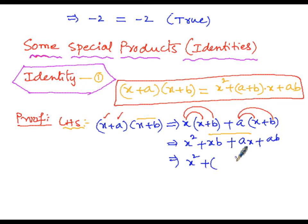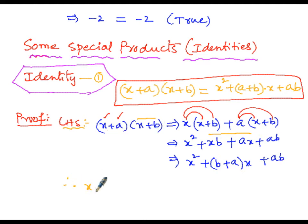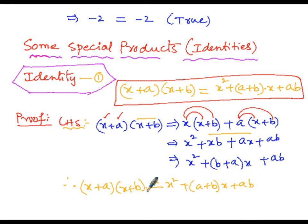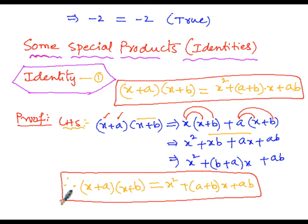Now collecting like terms: x squared is written as is. The terms bx and ax are like terms since both have variable x, so taking x as common gives x squared plus (b plus a) times x plus ab. Since b plus a is the same as a plus b, we get: x plus a into x plus b equals x squared plus (a plus b) times x plus ab. This completes the algebraic proof of the first identity.